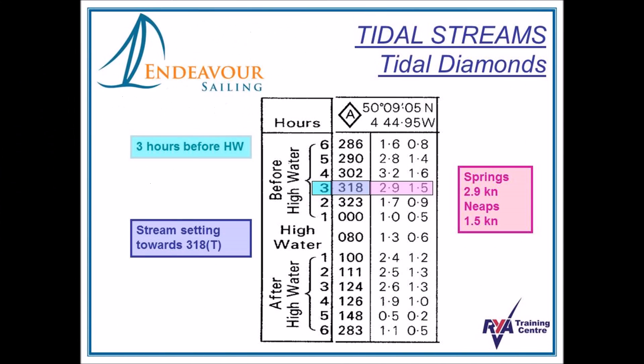Here we have some tidal stream data as you would find on the tidal diamonds on the chart. As highlighted, we are 3 hours before high water, and we have the next two columns. The first column — 318 — is degrees true, because tide always has two components: the rate and the direction. The direction is 318 degrees true and the rate is 2.9 on a spring tide, 1.5 on a neap tide. Always remember, the spring tide rate is always the biggest.